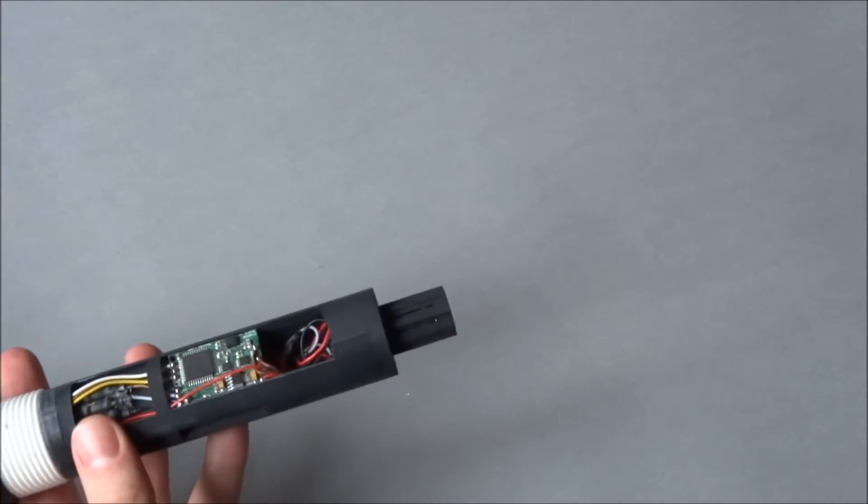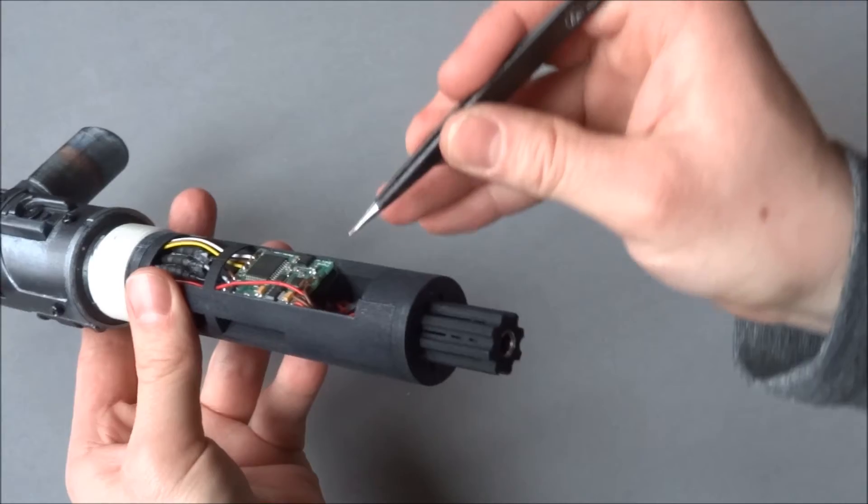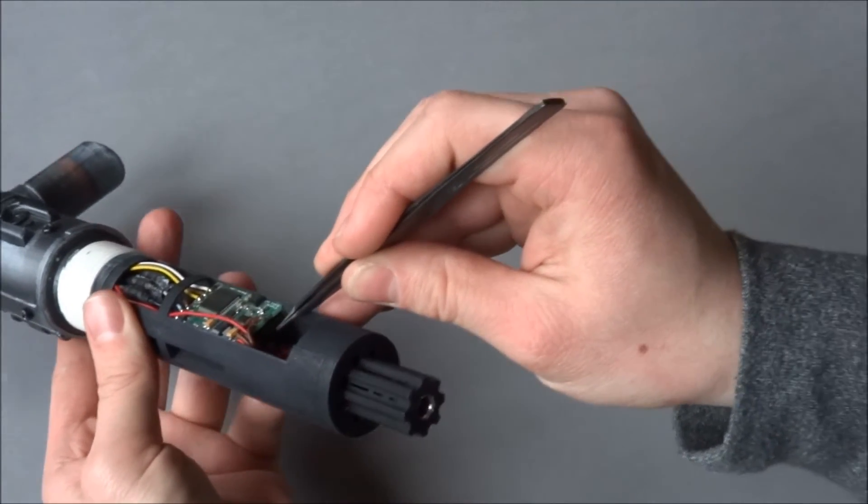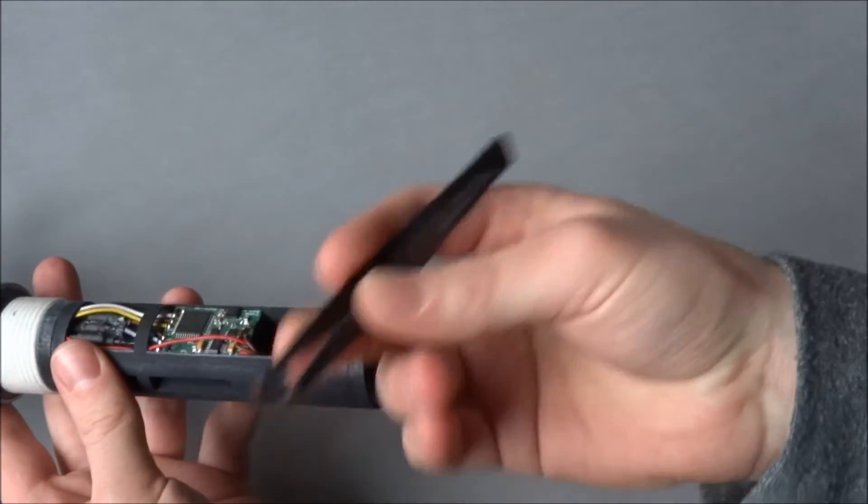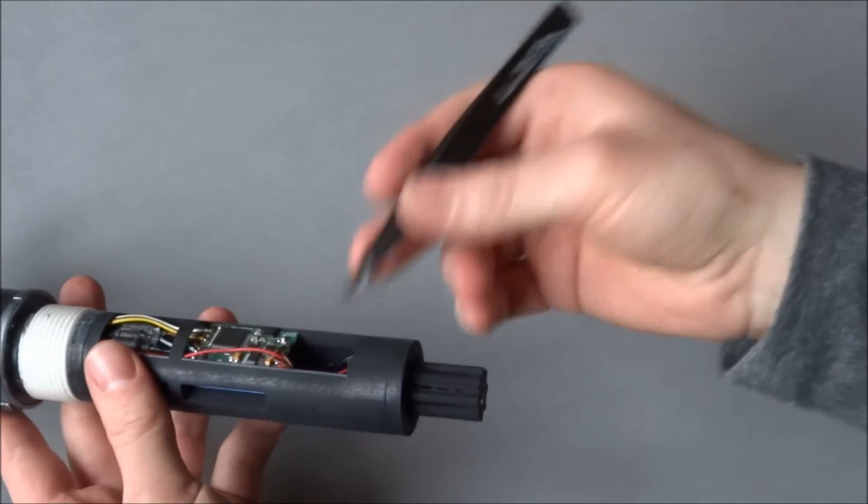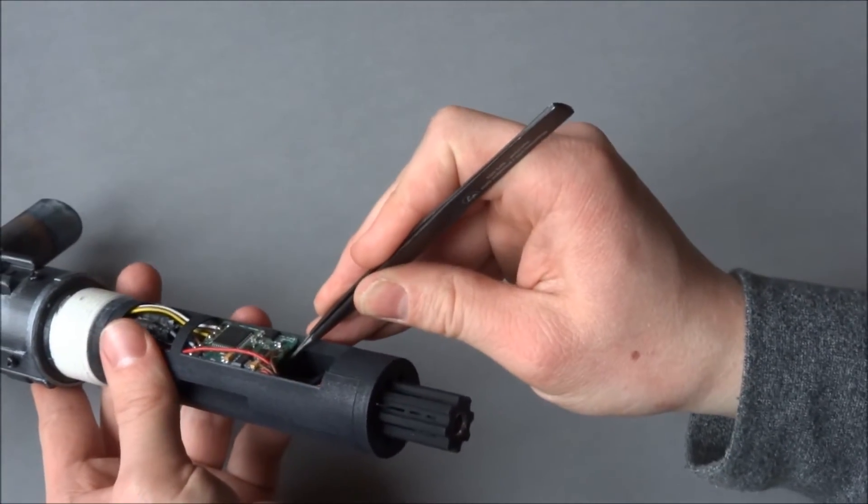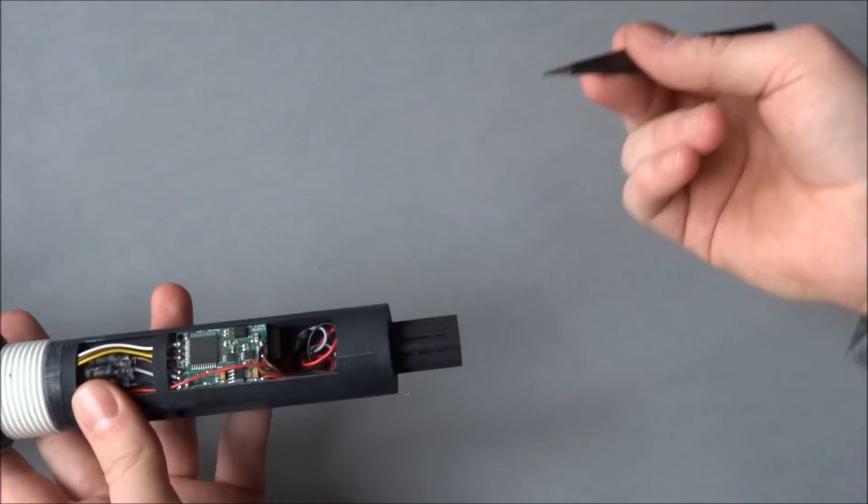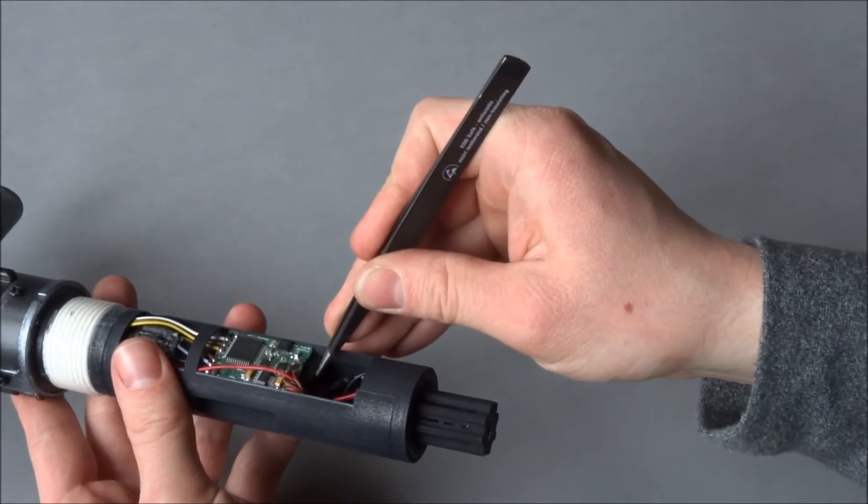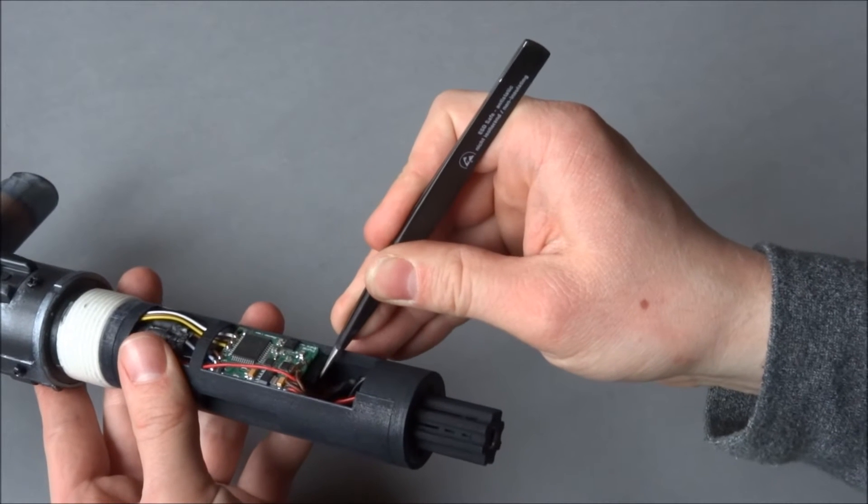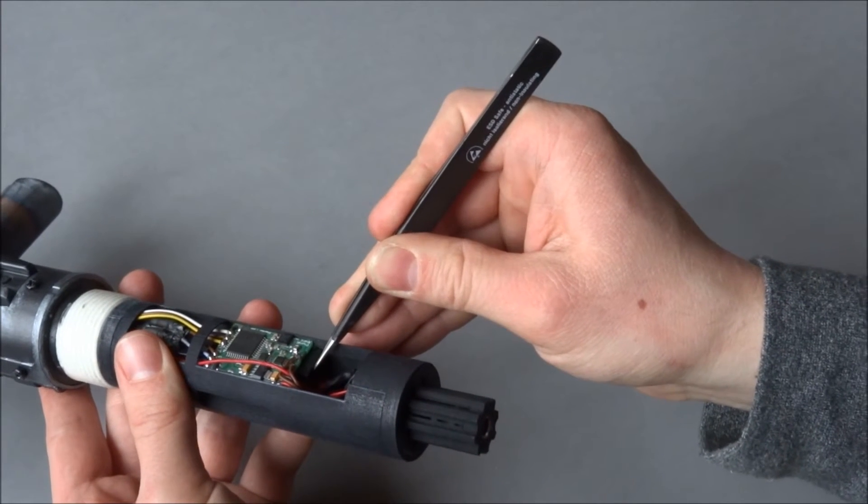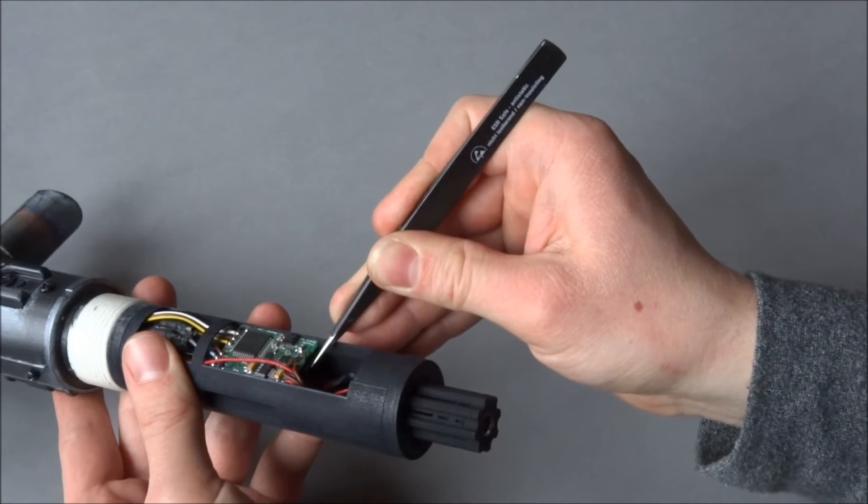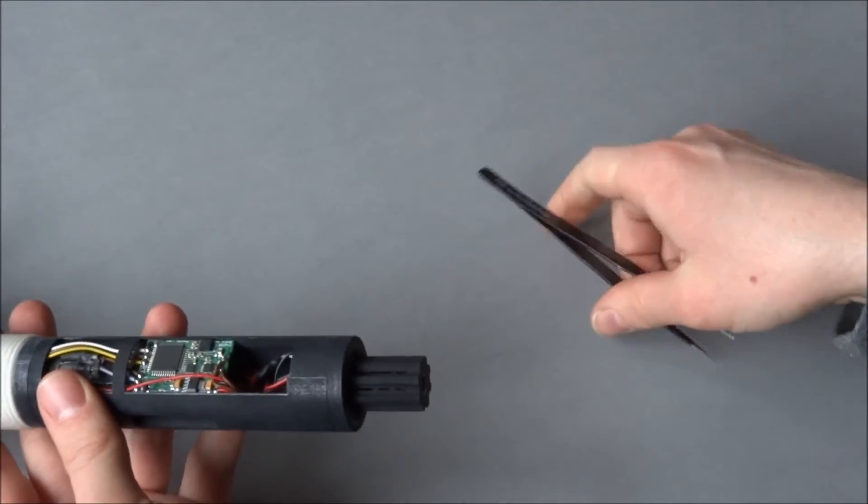If you now want to get to the SD card which is placed down under the board here, you just take some tweezers or something like that and you push on the SD card. Then you can take it out, make your changes, put it back in and push until it clicks. And that's it.